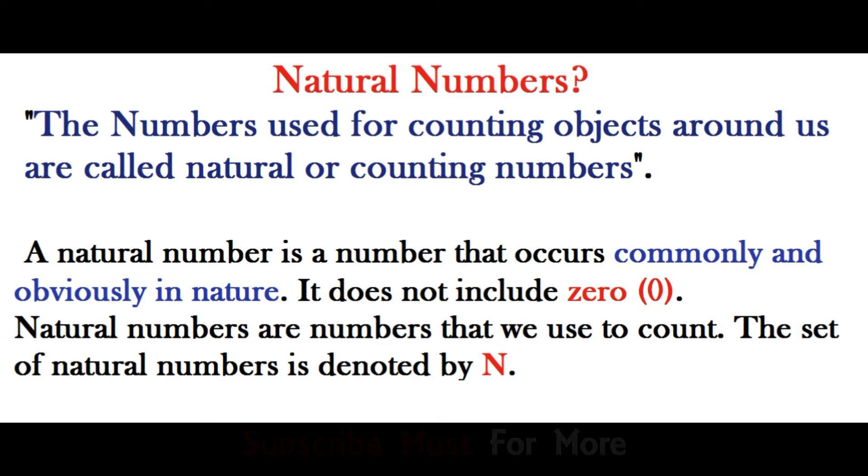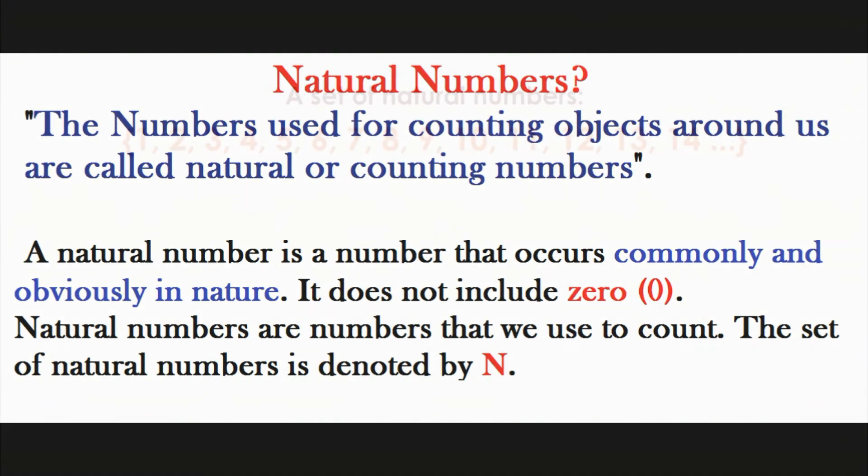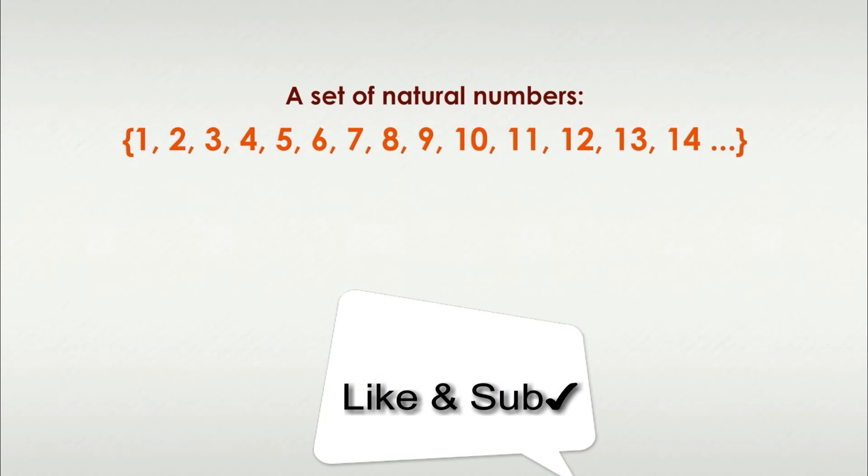The numbers used for counting objects around us are called natural or counting numbers. Natural numbers include the numbers 1, 2, 3, 4, and so on. Natural numbers can be placed within a set. The set of natural numbers is denoted by the capital letter N.